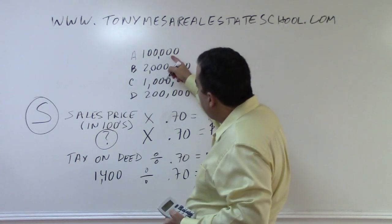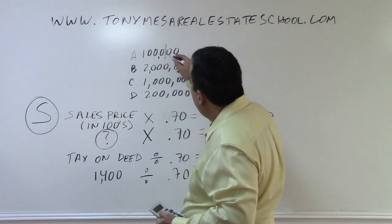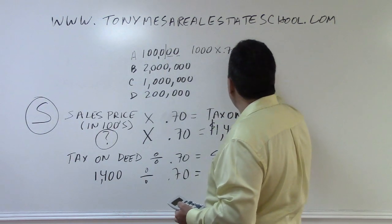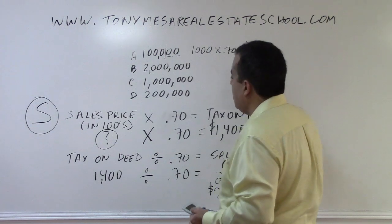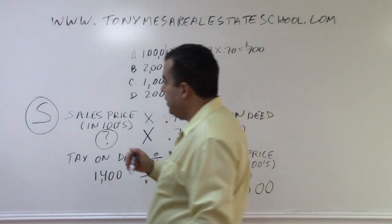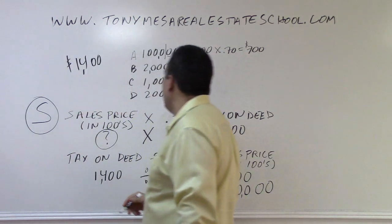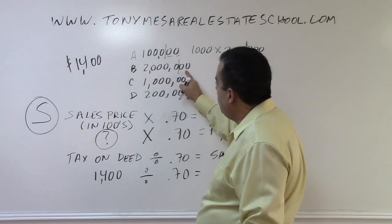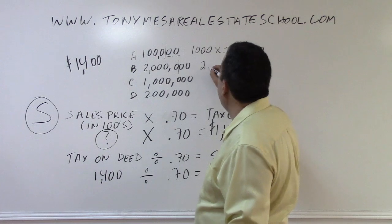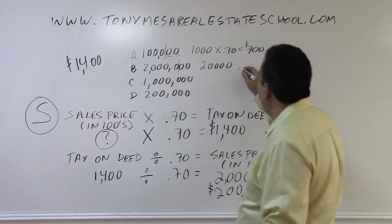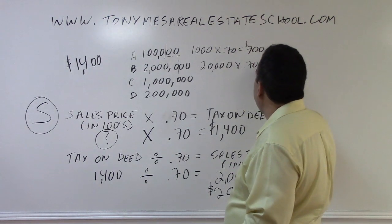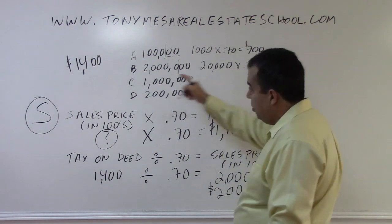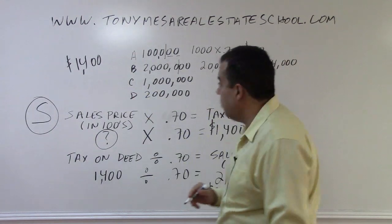Take answer choice A as a sales price: draw the line between the tens and hundreds — it ends with zero-zero, so the number on the left stays as is. Say that gives you 1,000 × 70 cents = $700. That's not $1,400, so that's wrong. Then try 2 million: draw the line — it ends with zero-zero, so you have 20,000 × 70 cents = $14,000. Notice 1,400 and $14,000 are two different numbers — be careful and pay attention. Then try 1 million: 10,000 × 70 cents = $7,000. Not correct either.